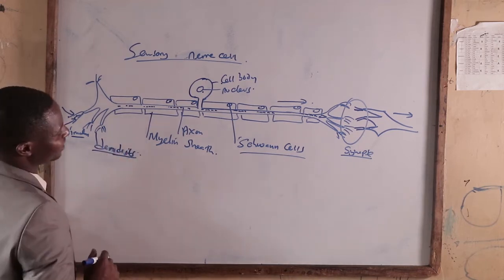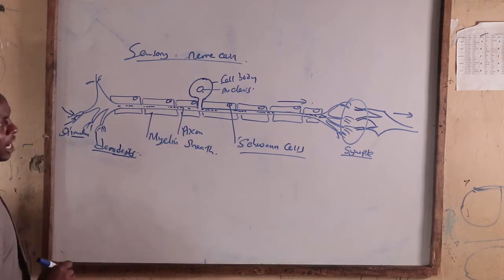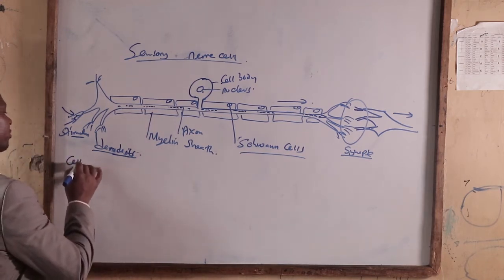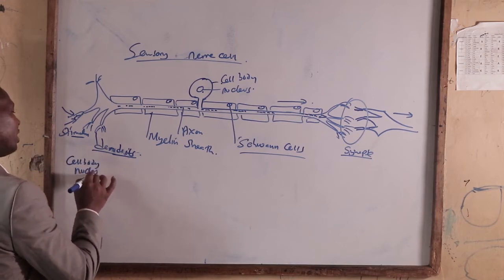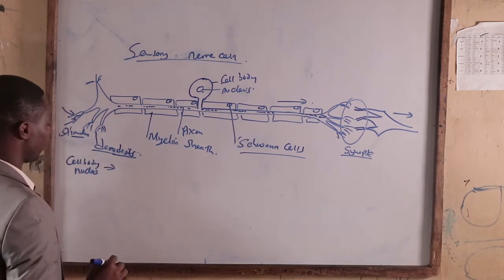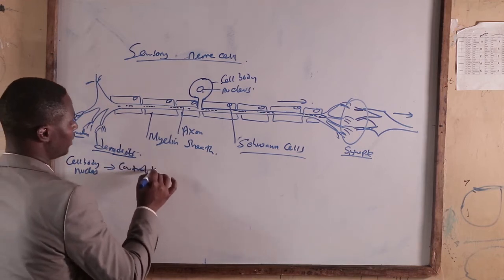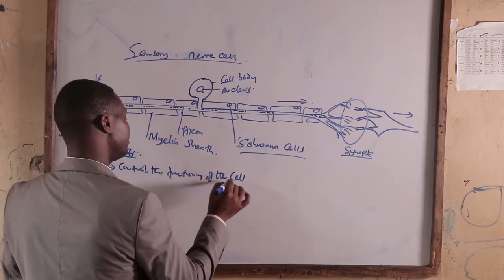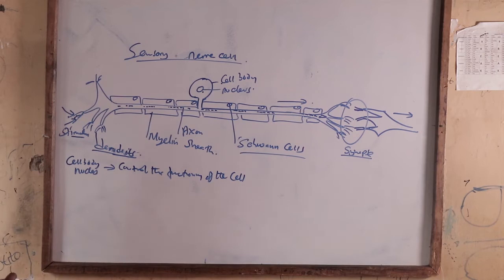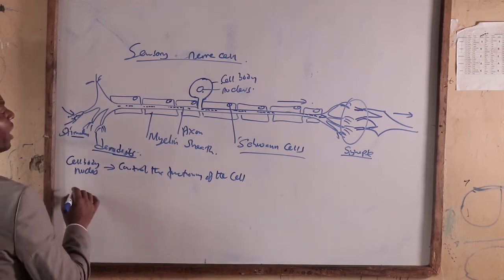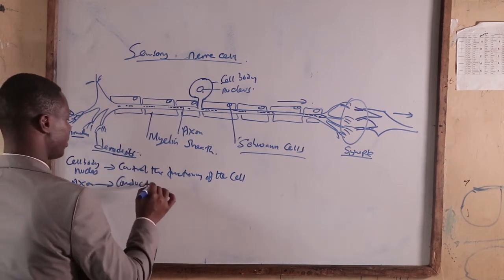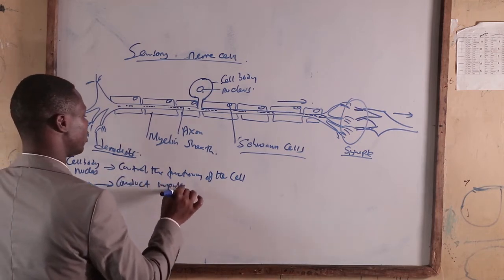Now, before we look at the motor neuron, what are the functions of each part? The cell body and the nucleus: their main function is to control the functioning of the cell. The axon: its function is to conduct impulses.